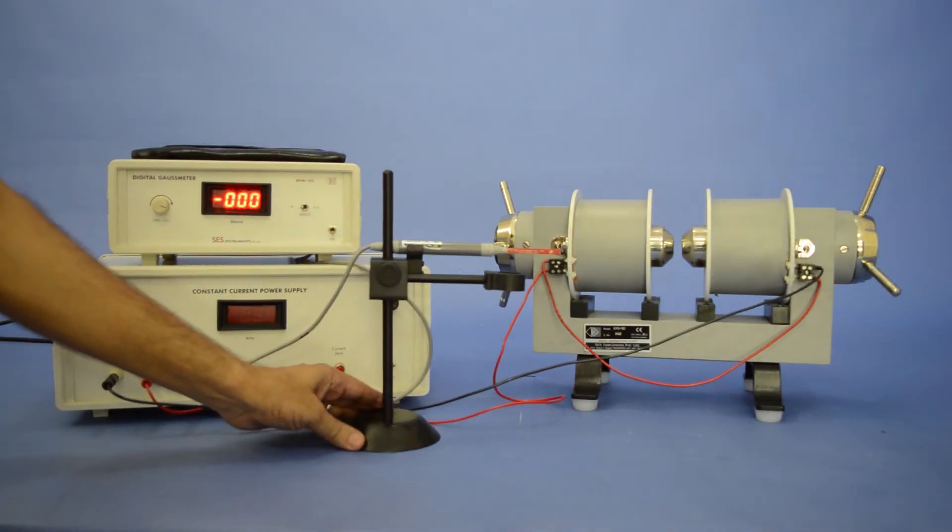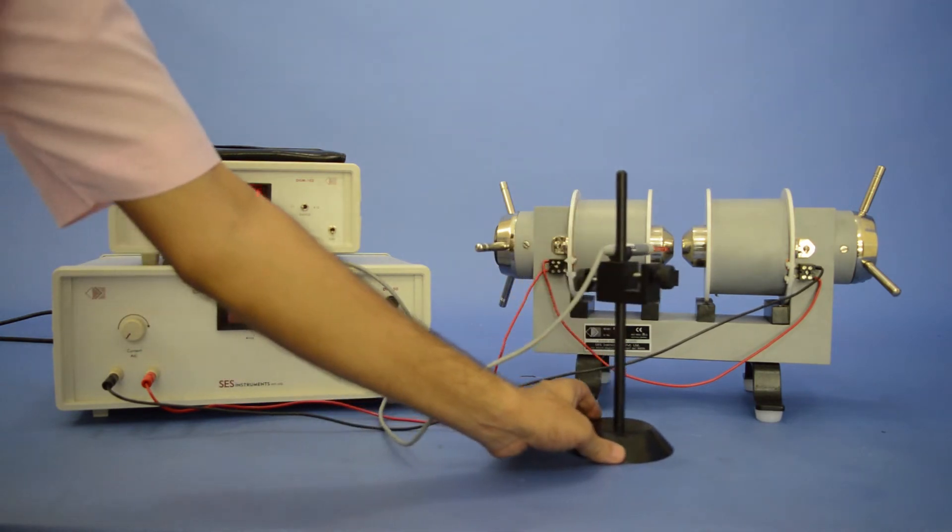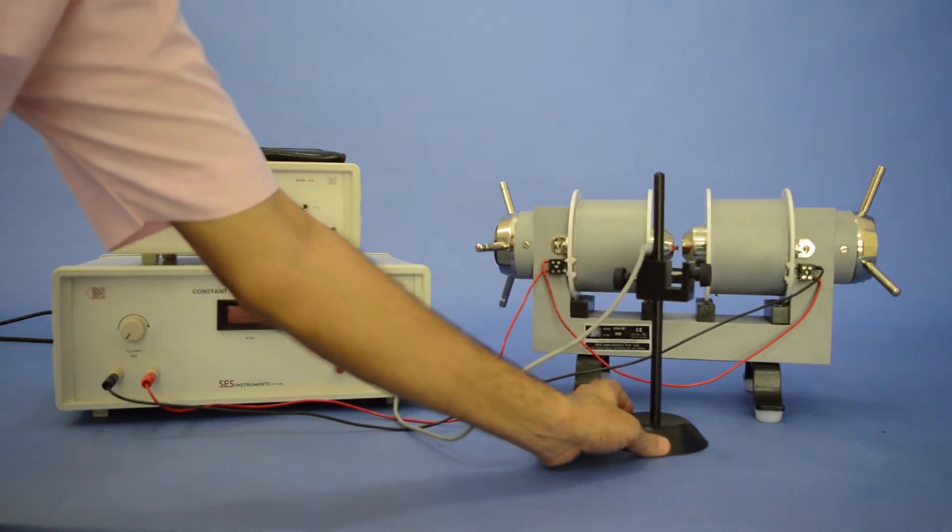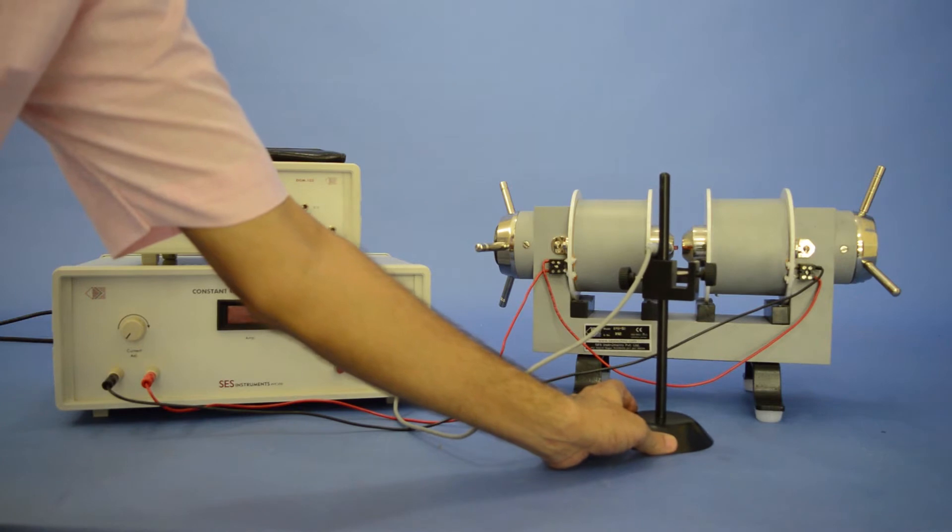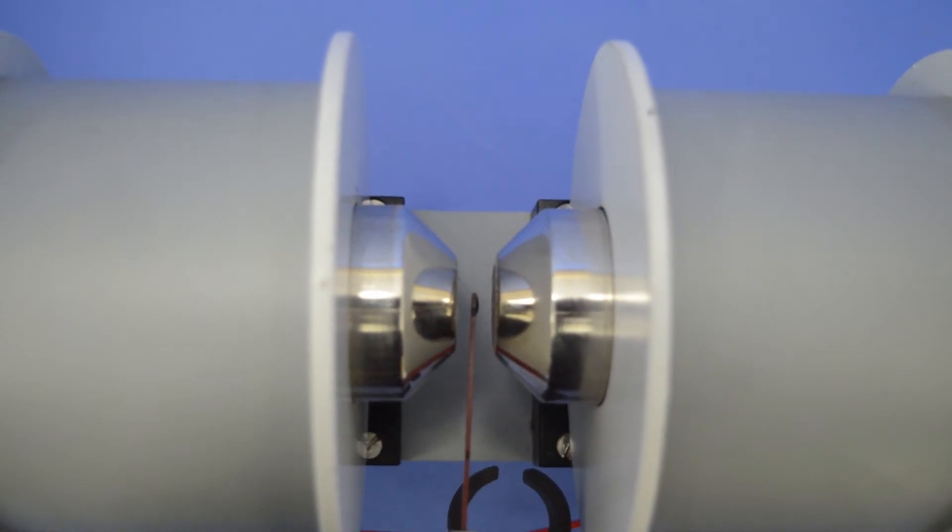Next, insert the probe in pre-adjusted air gap of electromagnet pole pieces. Probe should be perpendicular to magnetic field and at the center of pole pieces.